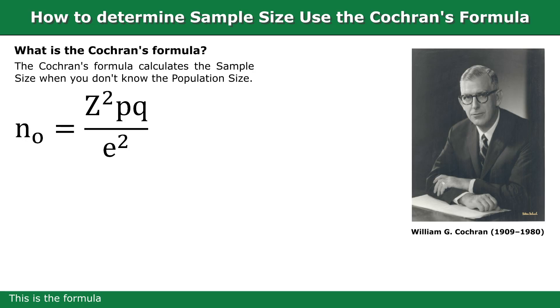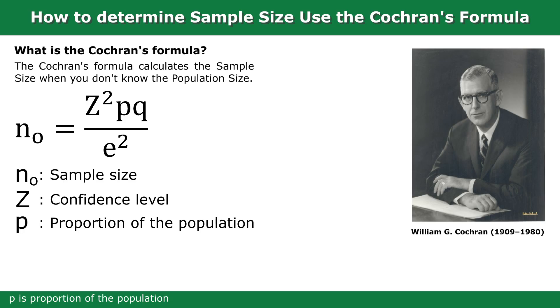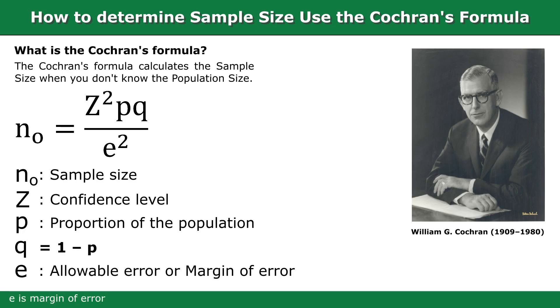This is the formula. N0 is sample size. Z is confidence level. P is proportion of the population. Q equals 1 minus P. E is margin of error.